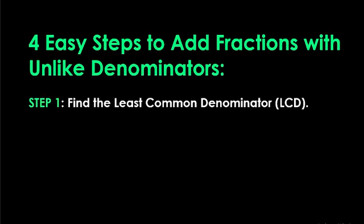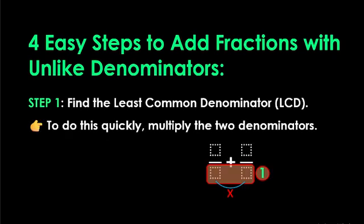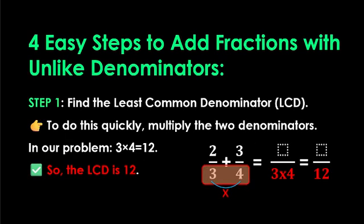Step 1, find the least common denominator or LCD. To do this quickly, multiply the two denominators. In our problem, 3 times 4 equals 12. So, the LCD is 12.